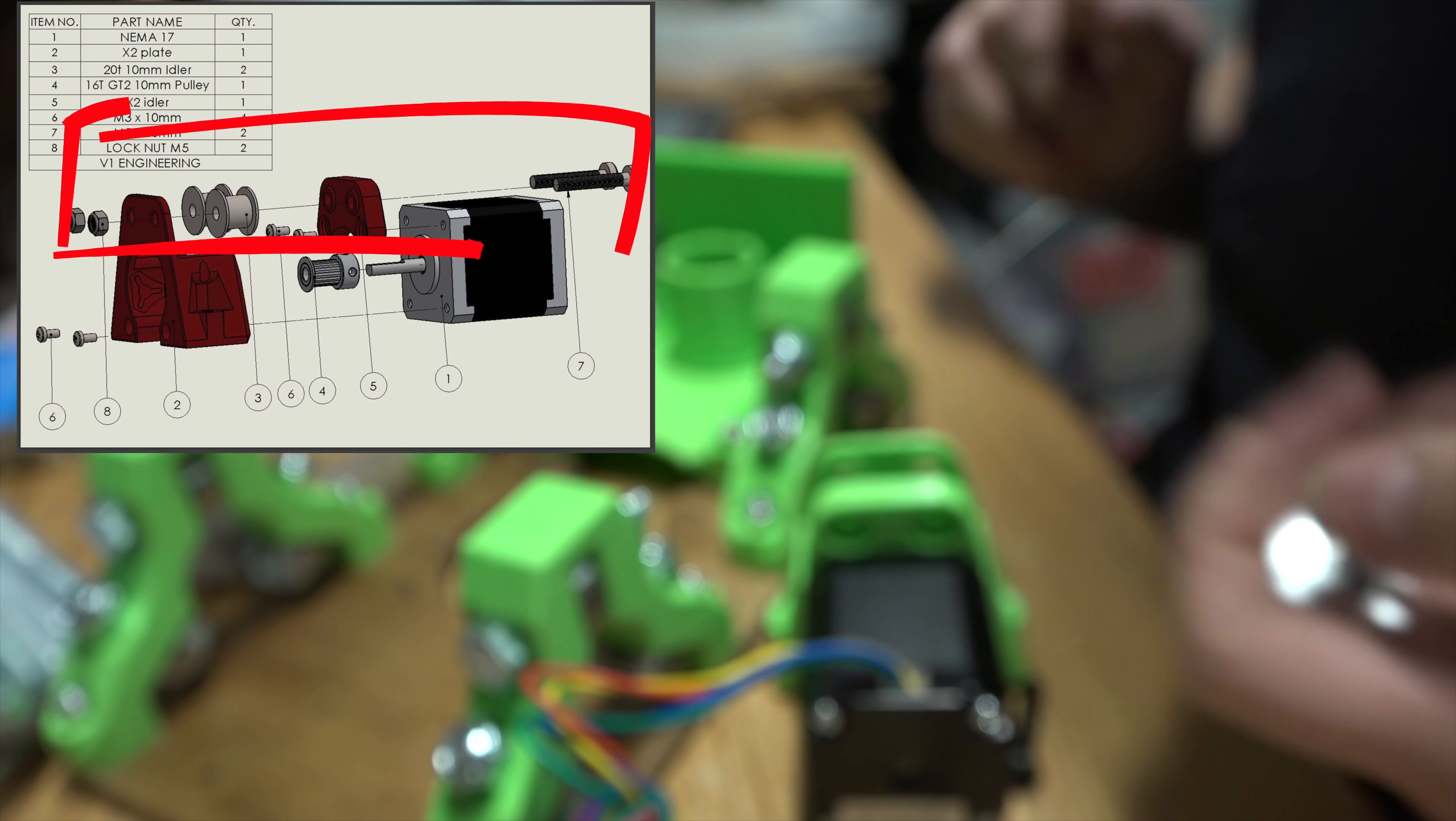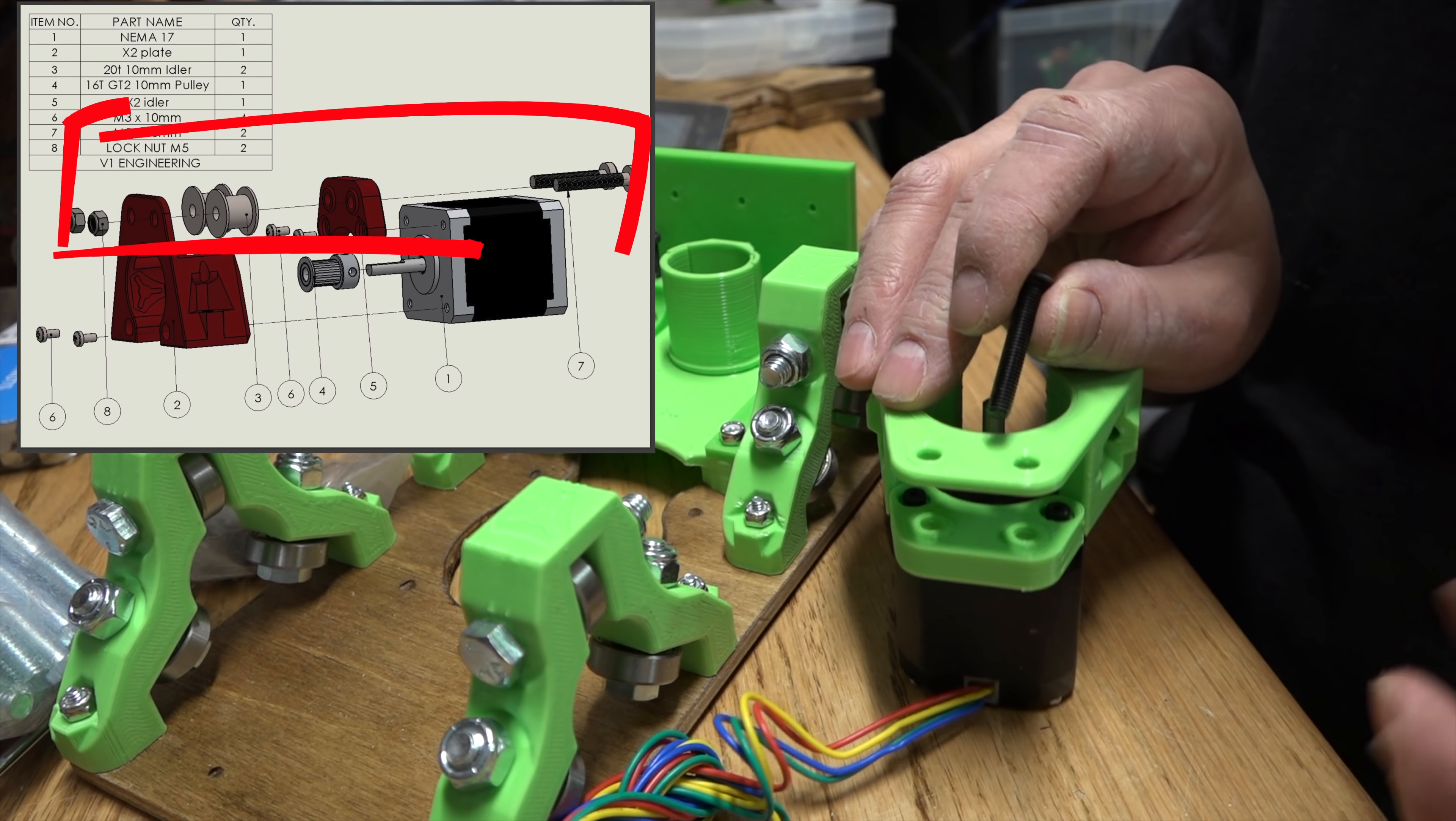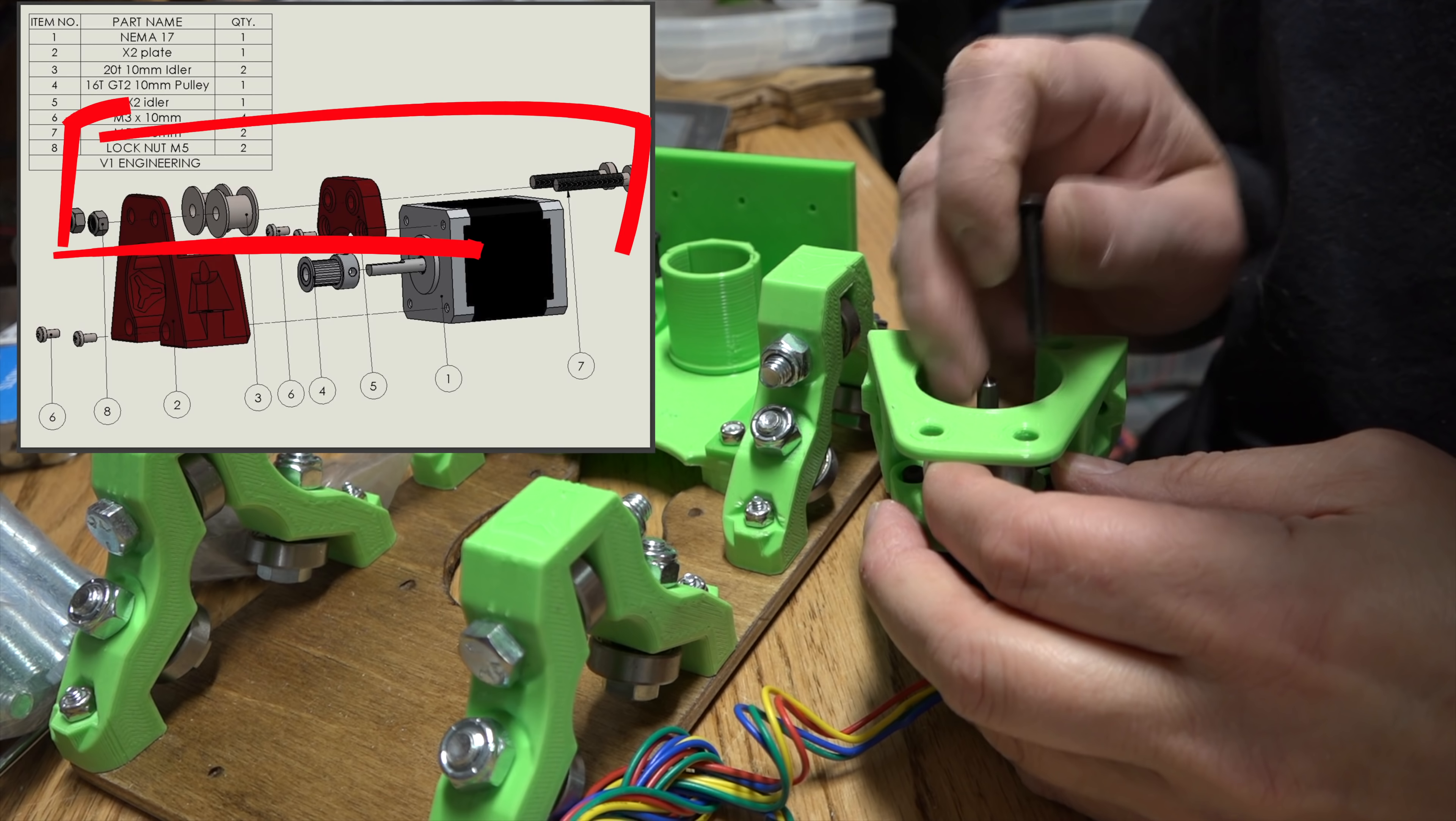Number seven, M5 by 30 with lock nut. Once again, these are the wider ones that match the width of the new belts that are going to be used here. And there's that M5 right there, and we'll just set this in here. There we go.